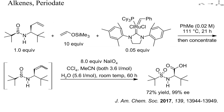In this example, a homoallylamine was first isomerized to an allylamine by heating with a ruthenium metathesis catalyst. Ruthenium then catalyzed the oxidative C–C double bond cleavage and the oxidation of a sulfenamide to a sulfonamide. No racemization occurred.